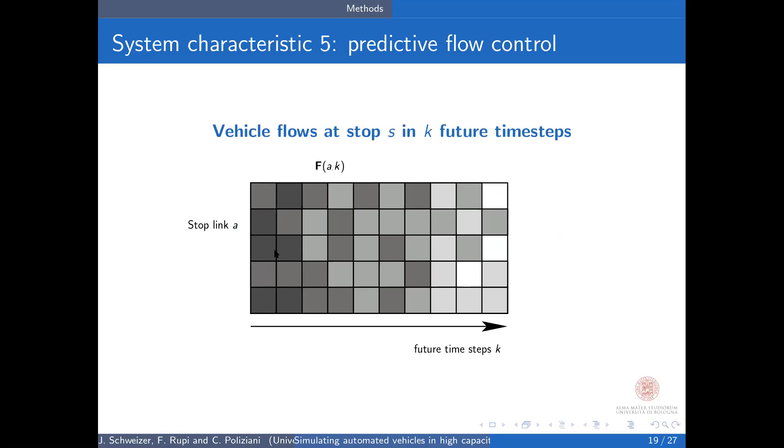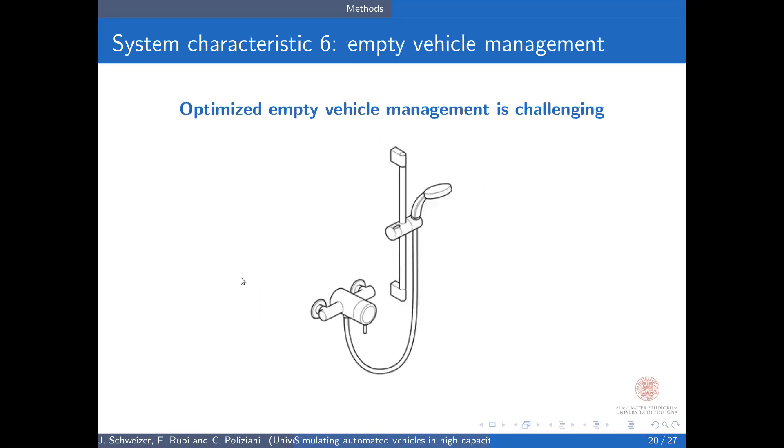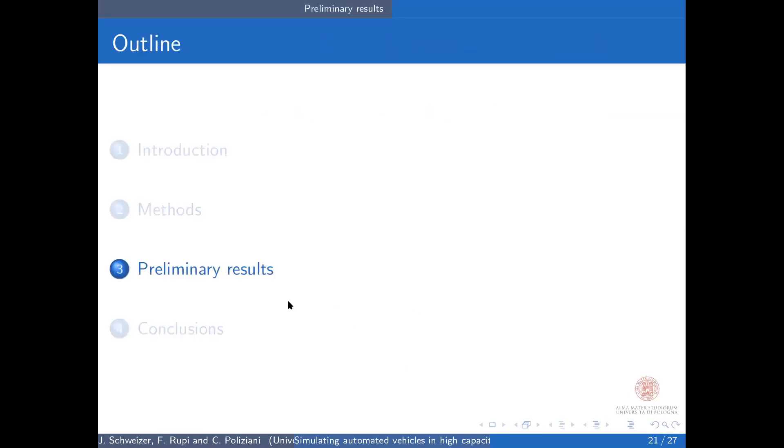Another requirement is predictive flow control: you can send vehicles only over a link when you're sure that the flow will be below a certain limit. This flow control is required to keep the flows below capacity limits, otherwise you get congestion. Optimized empty vehicle management is a big problem in these systems.